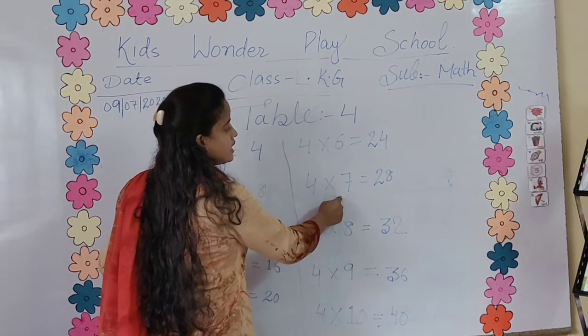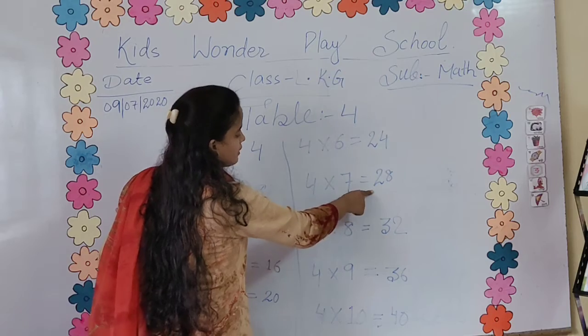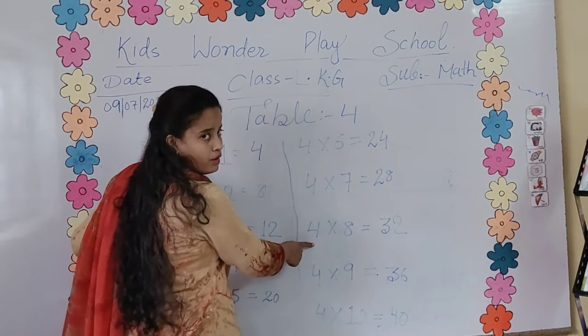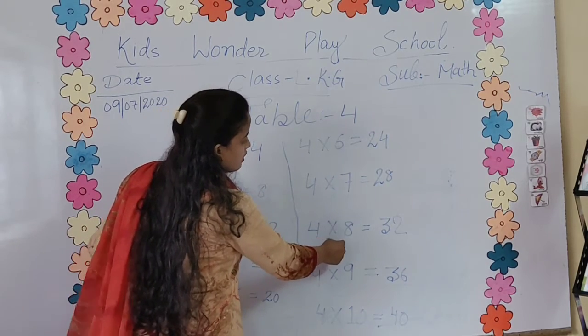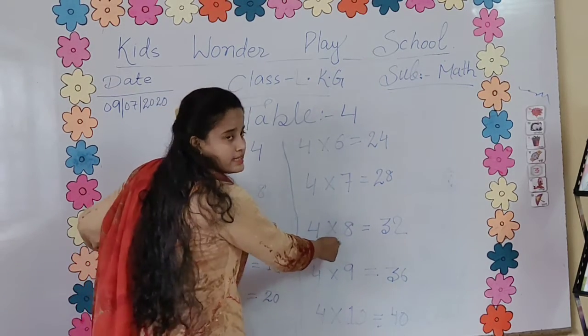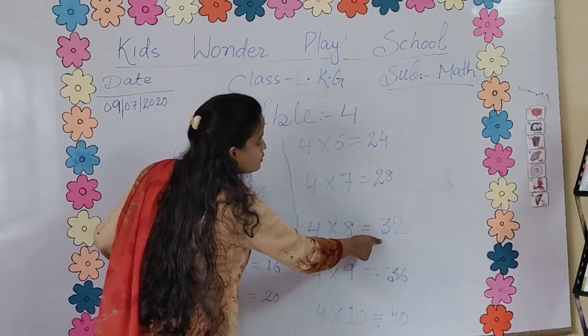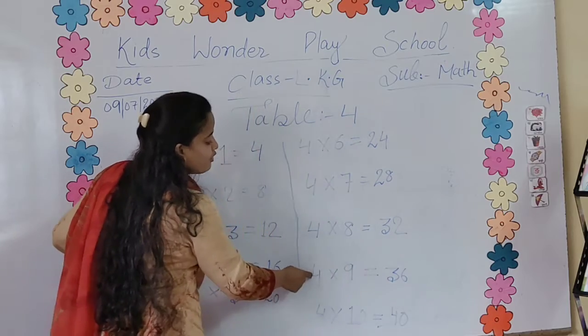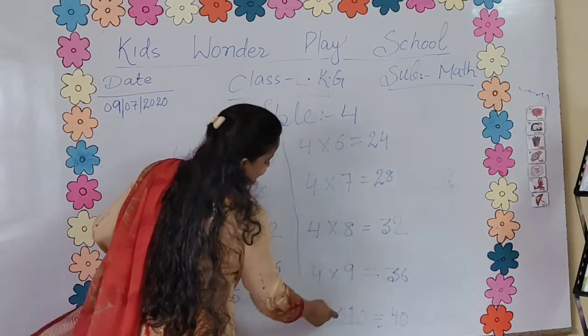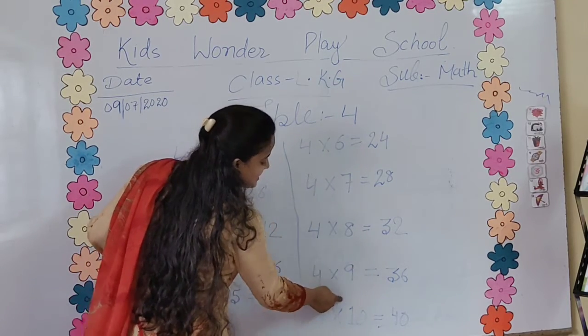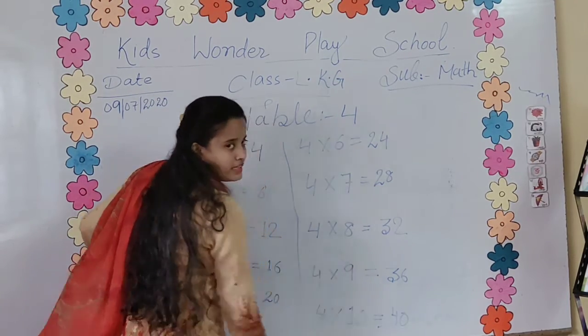4's are 7's are 28. 4's are 8's are 32. 4's are 9's are 36. 4's are 10's are 40.